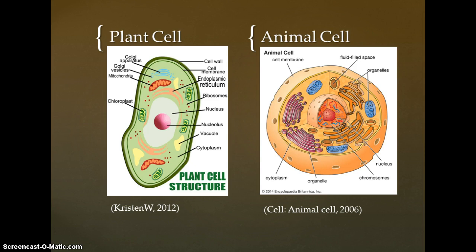Plant cells are generally distinguished from animal cells by: one, the presence of cell walls, chloroplasts, and central vacuoles in plants and their absence in animals; and two, the presence of lysosomes and centrioles in animals and their absence in plants. (Spellman, 2008, p. 129)